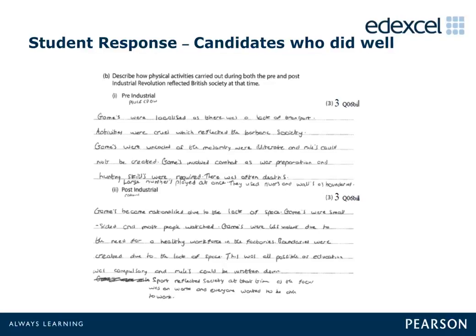In another answer that received maximum marks, question 6b1 gained 3 marks for: localised as there was a lack of transport; cruel as it reflected barbaric society; and games were uncoded as the majority were illiterate. A further three marks were awarded for question 6b2 for: less violent as there was a need for a healthy workforce; boundaries were created due to lack of space; and education was compulsory so rules could be written down.